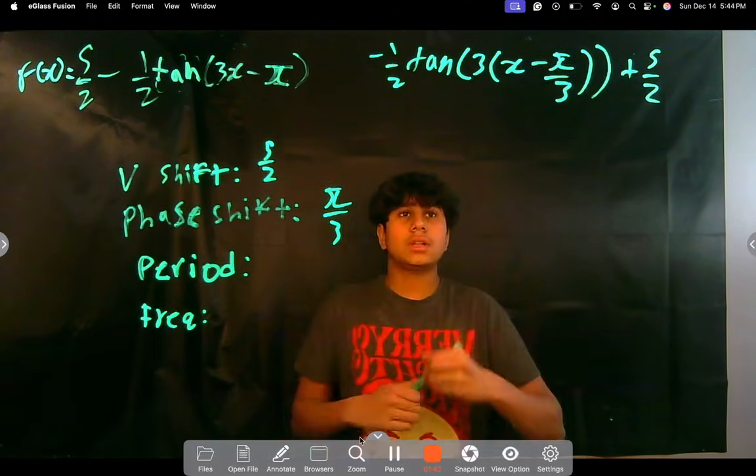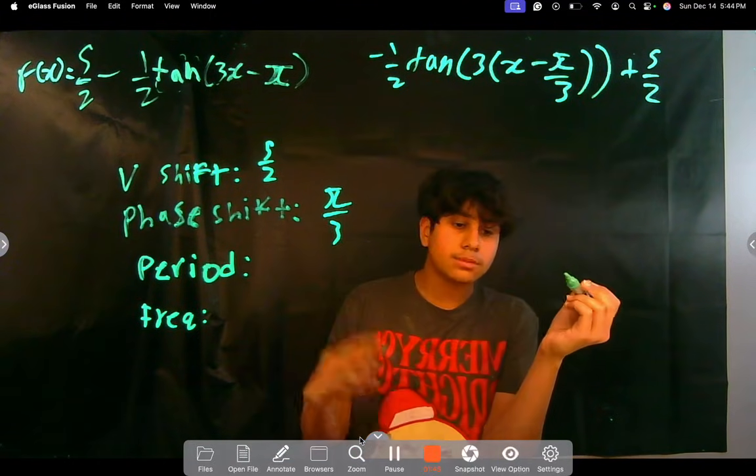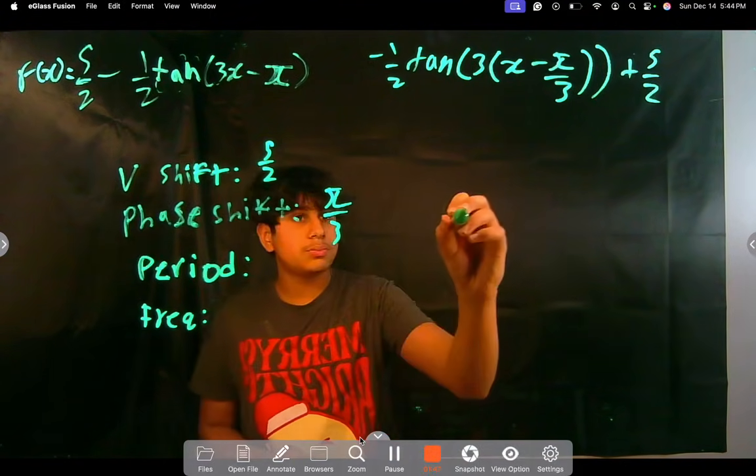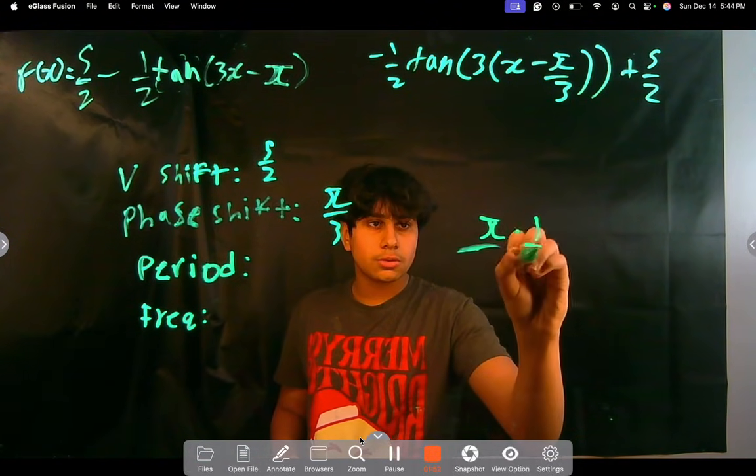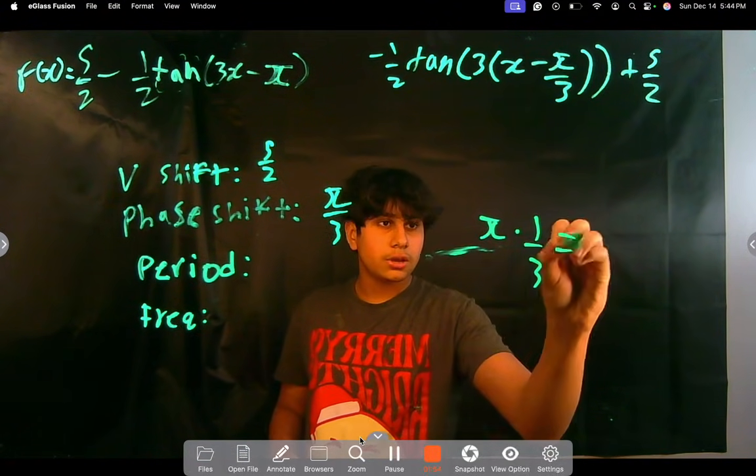What is our period? That's going to be whatever the change is on the x times the normal period, which is π. π is the normal period for tan, but it's going to be that times 1/3, which is equal to π/3.